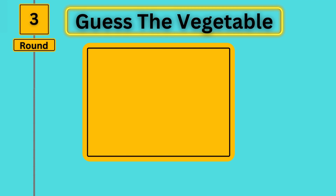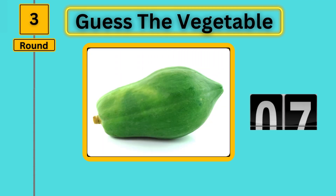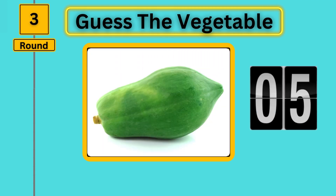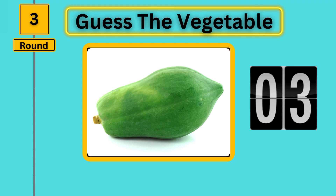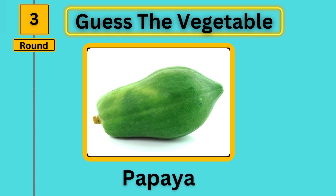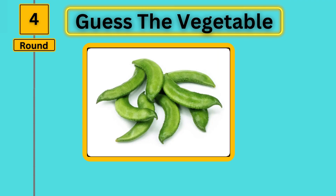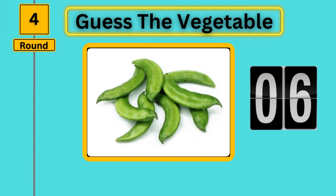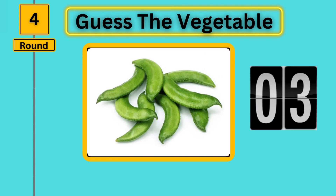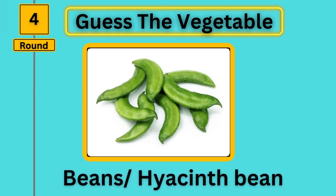Round 3, guess the vegetable. Papaya. Round 4, guess the vegetable. Beans, hyacinth bean.